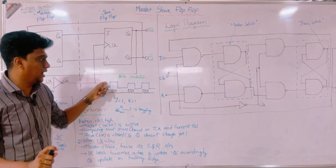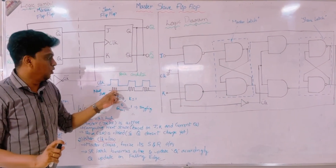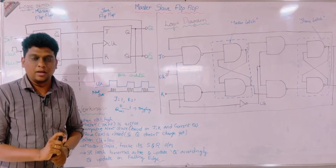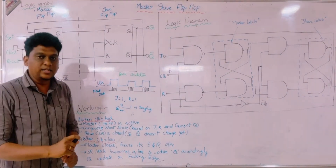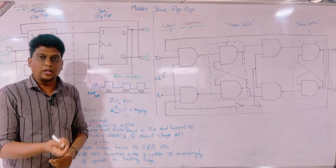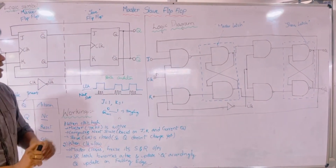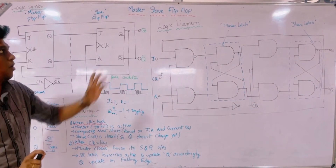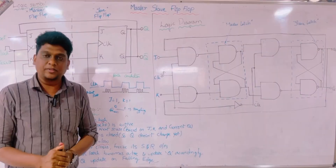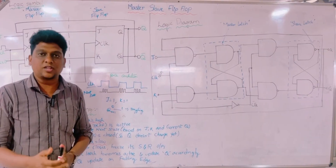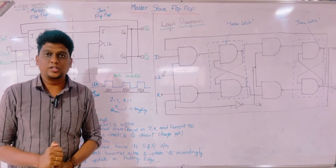So even for that clock pulse, there will be no frequency variation, and during the toggle function, it does not frequently toggle the data. This is the master-slave flip-flop. We can implement this master-slave flip-flop with any types of flip-flops. Thank you for watching the video.